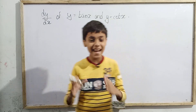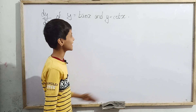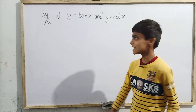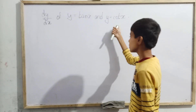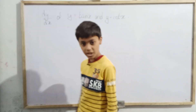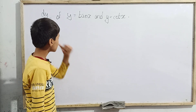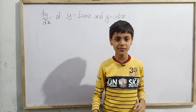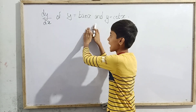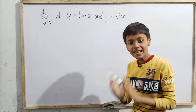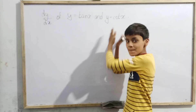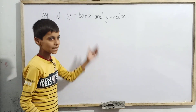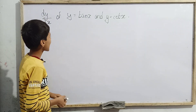Let's begin our today's topic, which is again a differentiation question. Today we'll be differentiating tan x and cot x. We have two questions here — first we'll find dy/dx for y equals tan x, and then we'll find it for y equals cot x.